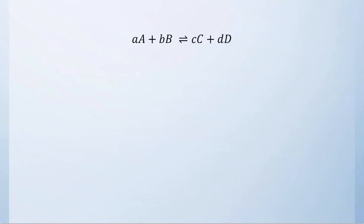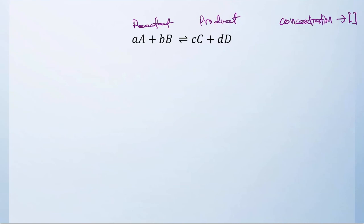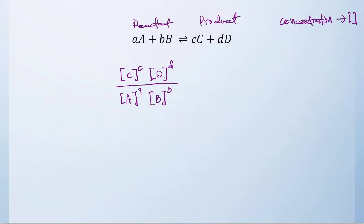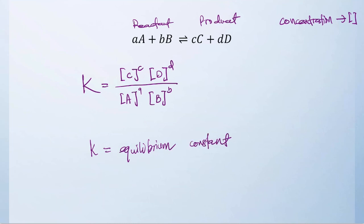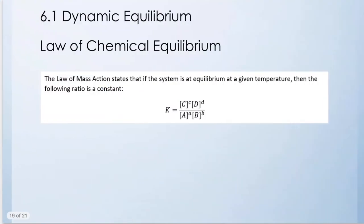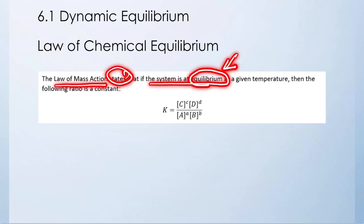In simple terms, where A and B are reactants and C and D are products, the law of mass action says: take the concentration of C raised to its coefficient c, multiplied by the concentration of D raised to its coefficient d, and divide by the concentration of A raised to its coefficient a, multiplied by the concentration of B raised to its coefficient b. This equals a constant K, which we call the equilibrium constant. That is essentially what the law of mass action states.